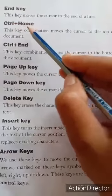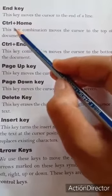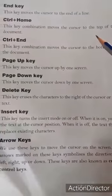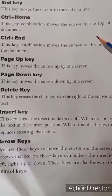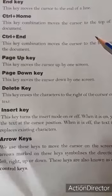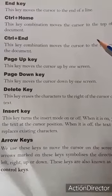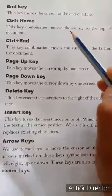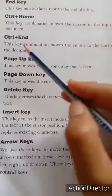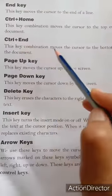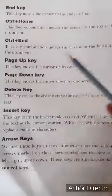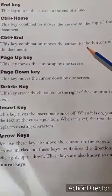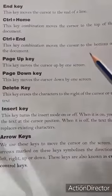Next, Ctrl plus Home key — CTRL is the short form of Control button. This key combination moves the cursor to the top of the document। अगर आपने 10 pages का एक document type किया और आप page 10 पर हैं, तो Ctrl और Home key को combine press करने से cursor document के सबसे top page पर आ जाएगा। Ctrl plus End key: this key combination moves the cursor to the bottom of the document — यह key combination press करने पर cursor document के सबसे नीचे आ जाएगा।